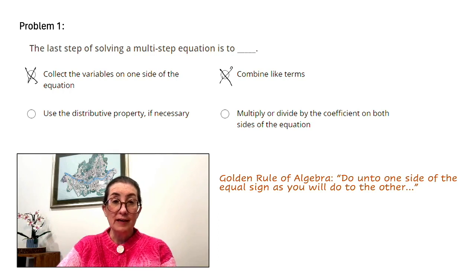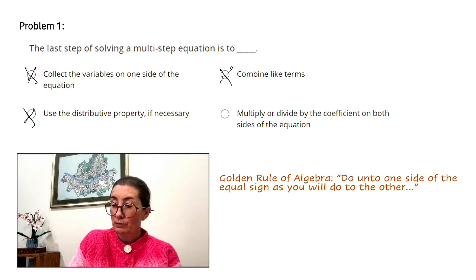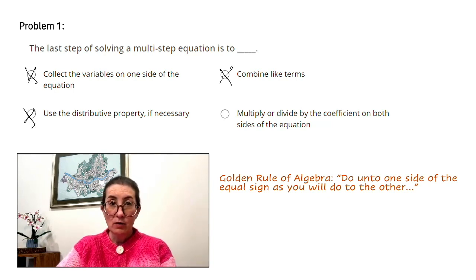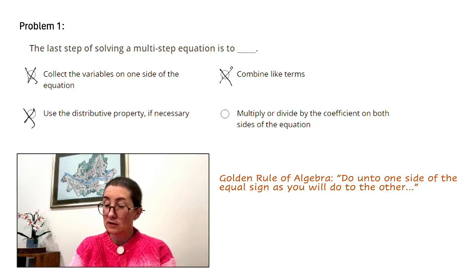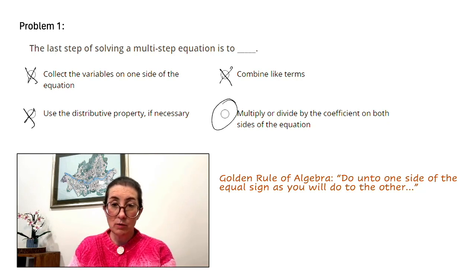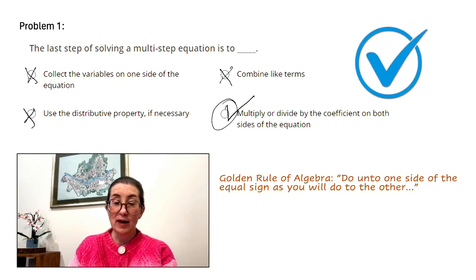Use the distributive property if necessary. The distributive property is if you multiply a value by its sum or difference, you get the same result. That isn't a step at all, so that won't be the answer either. Now, let's just review the fourth step that we talked about earlier. Multiply or divide to isolate the variable, and let's look at our last answer here. Multiply or divide by the coefficient on both sides of the equation. Those match, so that is the correct answer.